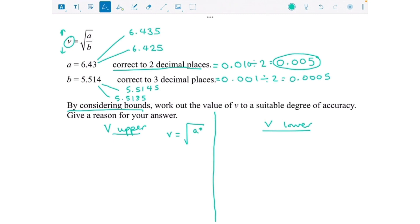To get the smallest v, we're going to do the square root of the smallest a divided by the biggest b. That's just because we're dividing.